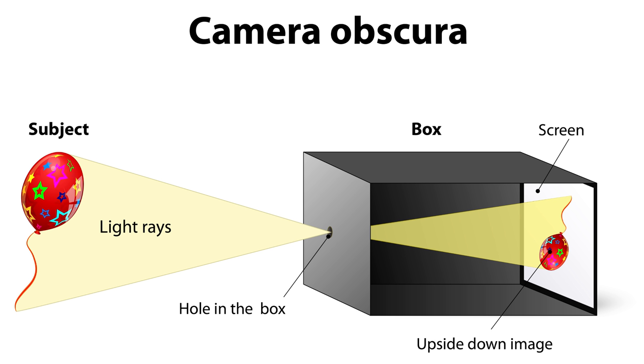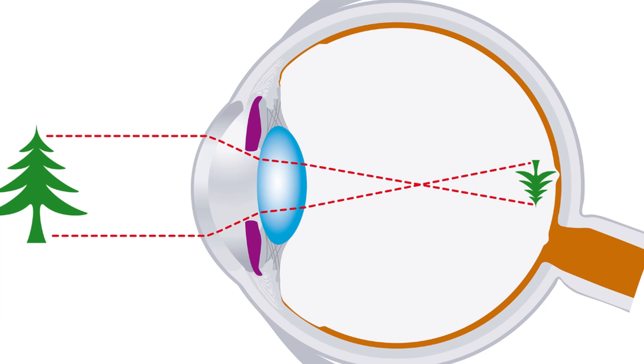And so what that does is it actually forms an image on the backdrop there. In fact, that's one of the ways how our eyes work. The reason we have a small little pupil is to make a pinhole camera, so it preserves the location of the light coming in so it forms an image, as opposed to just a blurry background like this.